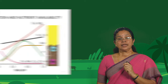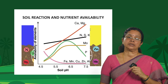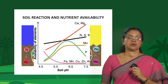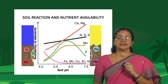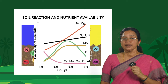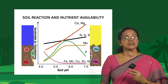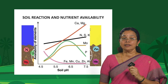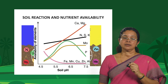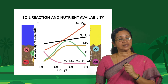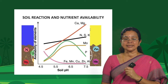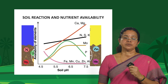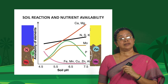Now let us see the effect of soil reaction on nutrient availability. Soil reaction refers to the pH of the soil or the hydrogen ion activity. When the soil pH is on the higher side — that is, alkaline in nature — micronutrients are relatively unavailable to the plants whereas macronutrients are relatively available. But when the pH moves towards the acidic range, micronutrients become relatively more available than the macronutrients.